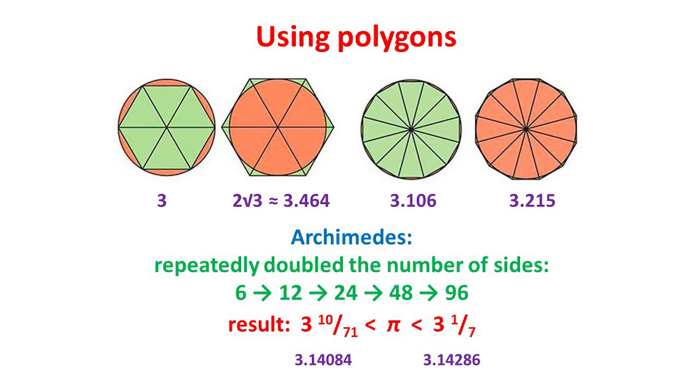He next doubled the number of sides to 12, which improved the lower estimate for pi to 3.106, and the upper estimate to 3.215. Three further doublings then led to polygons with 24, 48, and eventually 96 sides, and to the estimates 3 and 10/71, and 3 and 1/7, or 22/7, which give pi to two decimal places, 3.14.